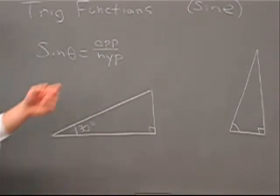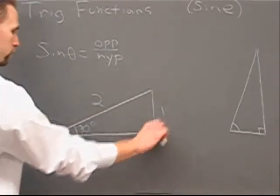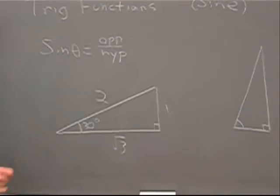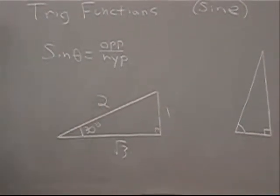For example, in the 30-60-90 triangle, the ratios of the sides are 2 to 1 to square root of 3. And from this example, you would say that the sine of 30 degrees is 1 half, opposite over hypotenuse.